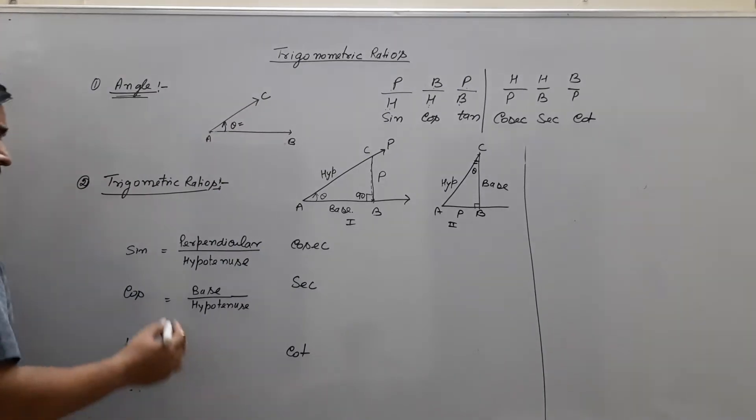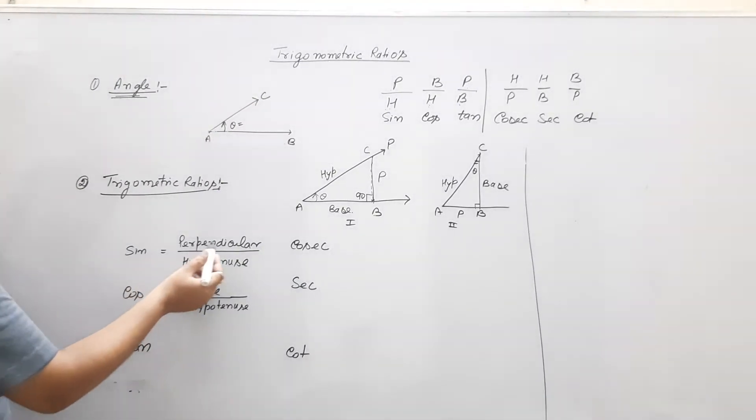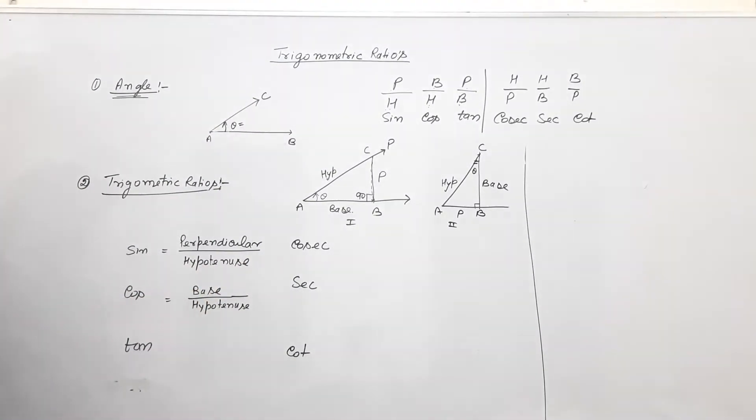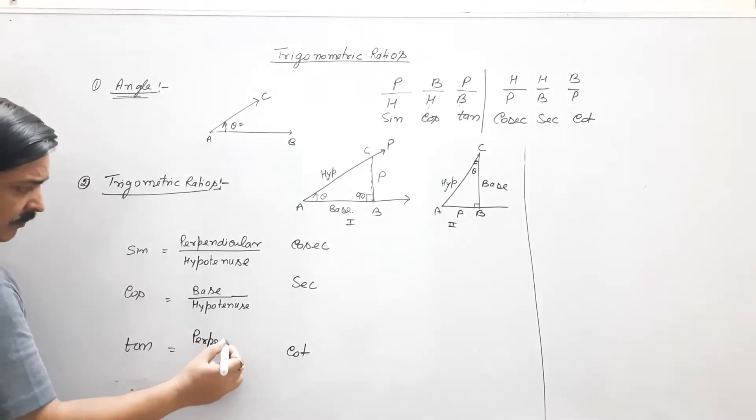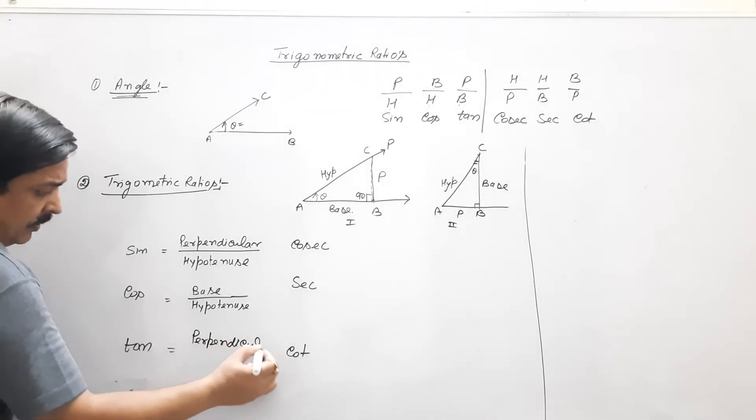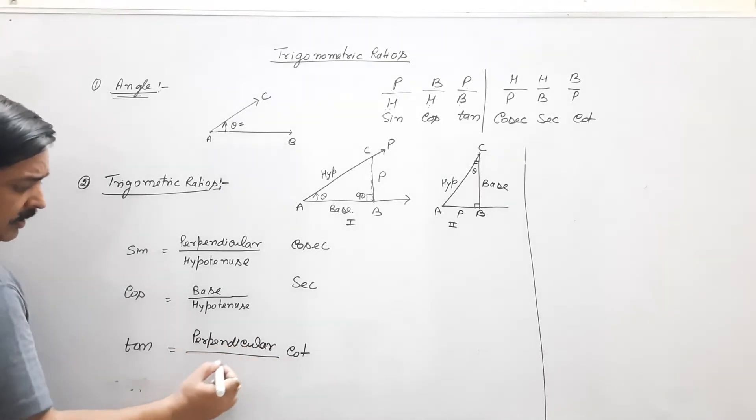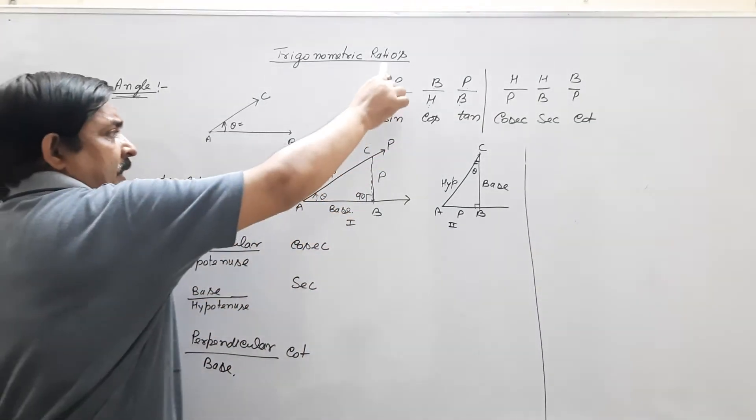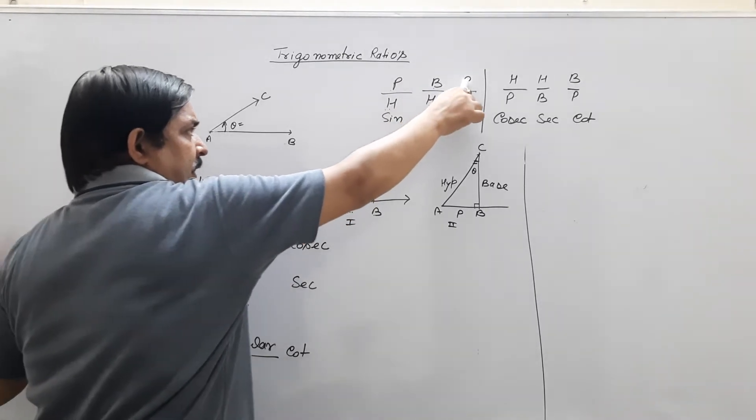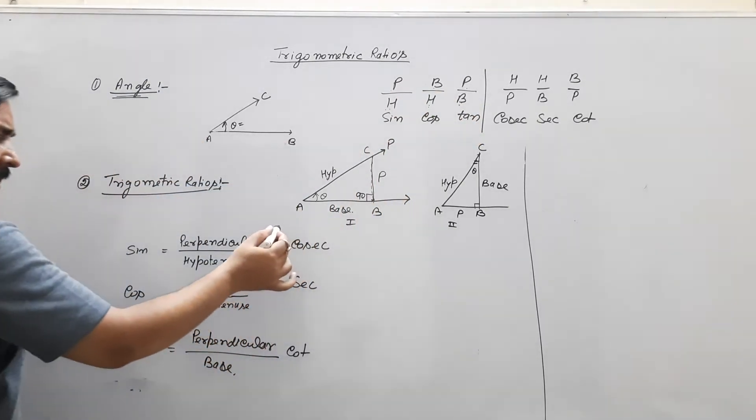So we can write sin perpendicular upon hypotenuse, cos base upon hypotenuse, and tan perpendicular divided by base, according to this, perpendicular upon hypotenuse, base upon hypotenuse, perpendicular upon base. Clear?